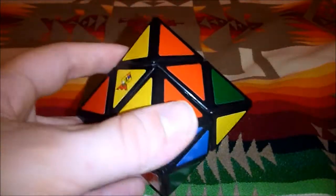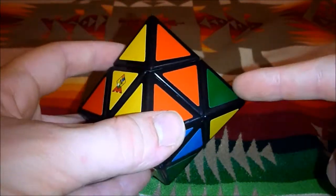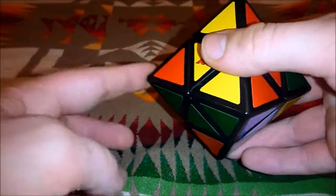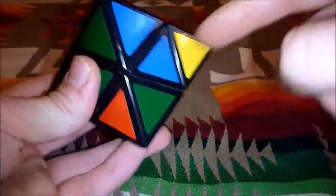And what this algorithm does is it takes this piece right here, moves it over to this side, moves this piece right here, and this piece right here.